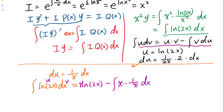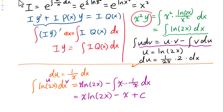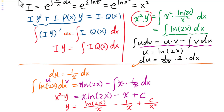This gives us x times natural log of 2x minus x plus C. So x squared times y equals x times natural log of 2x minus x plus C. Dividing both sides by x squared, y equals natural log of 2x over x minus 1 over x plus C over x squared.